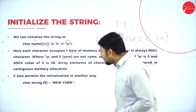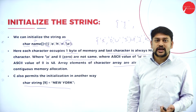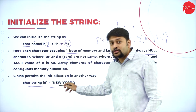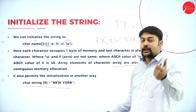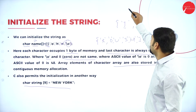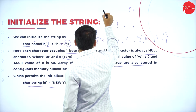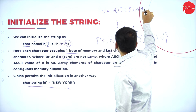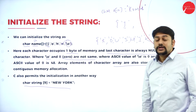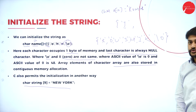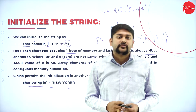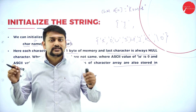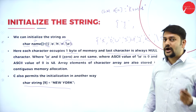Array elements of a character array are also stored in continuous memory allocation. Now the second method to initialize a string: instead of flower brackets, you can use double quotes. For example: char array[10] = "Kaushik" — just enclose the value in double quotes. You have two methods; pick whichever is easier for you.